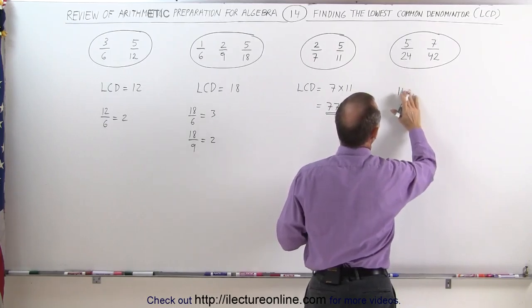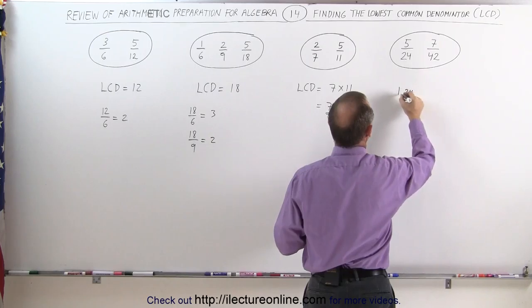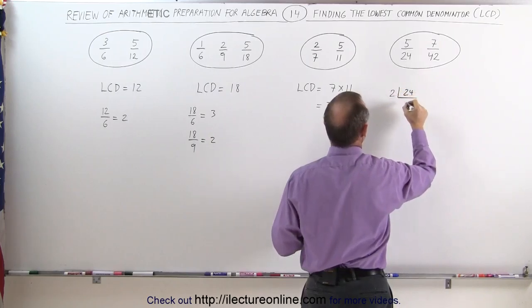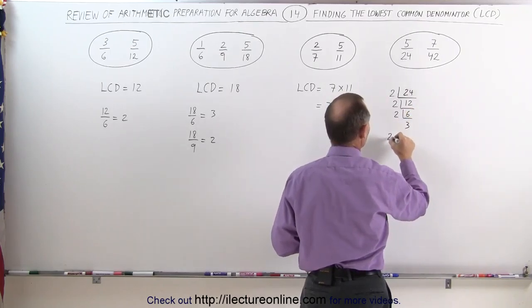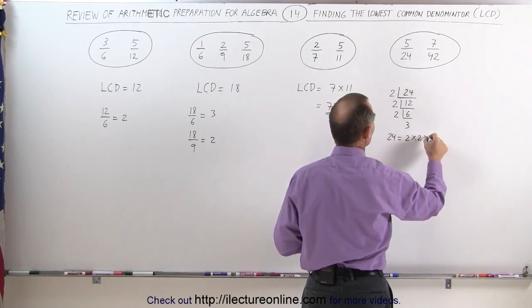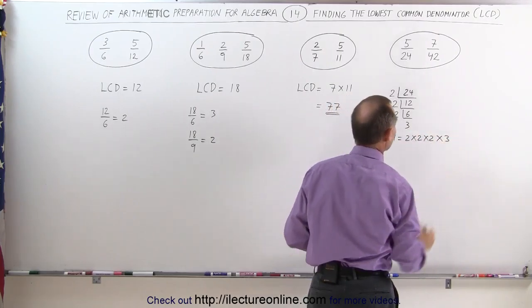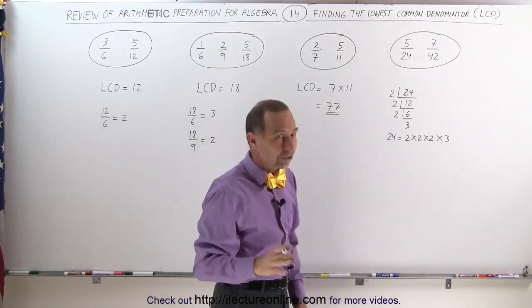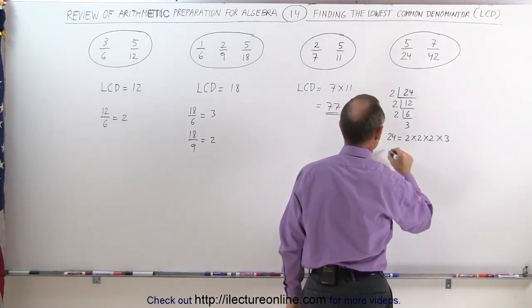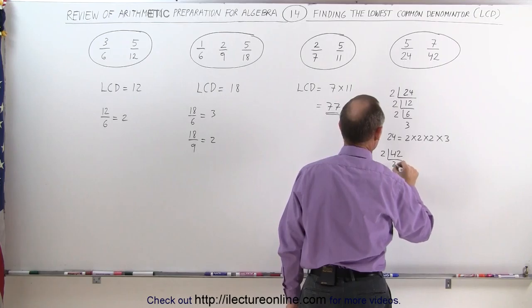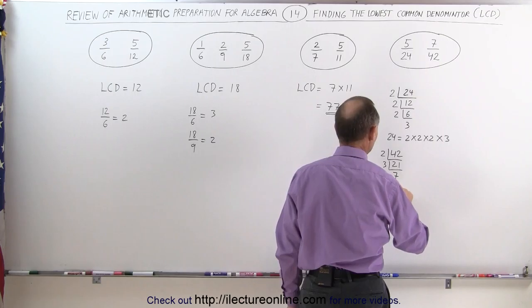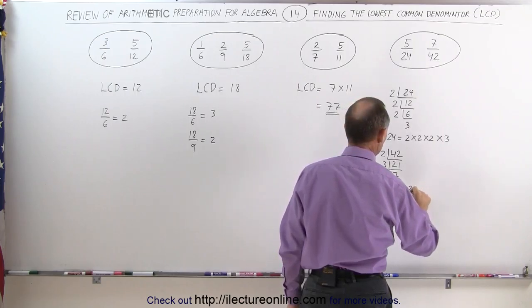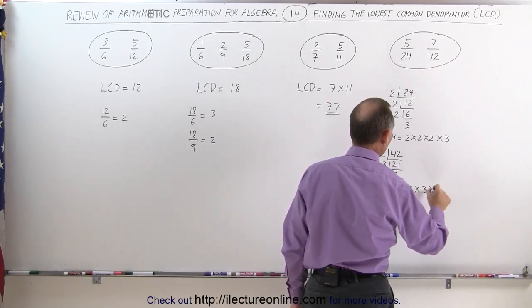Starting with 24: 24 divided by 2 gives 12, divided by 2 gives 6, divided by 2 gives 3, which means 24 equals 2 times 2 times 2 times 3. Then for 42: 42 divided by 2 gives 21, and 21 divided by 3 gives 7, which means 42 equals 2 times 3 times 7.